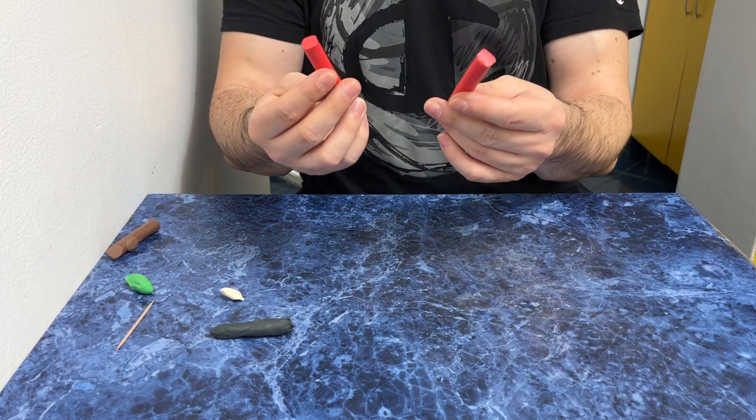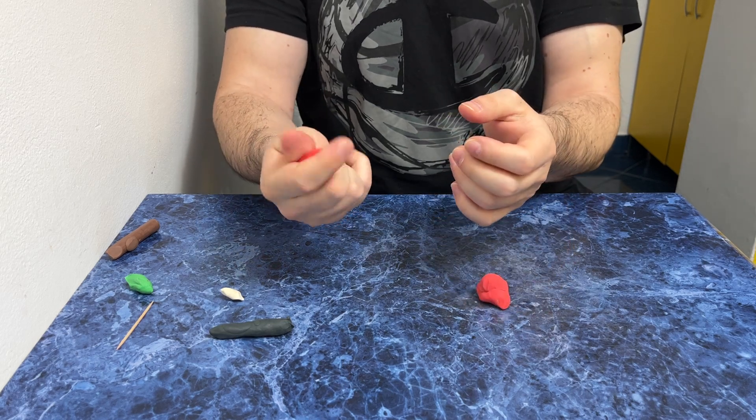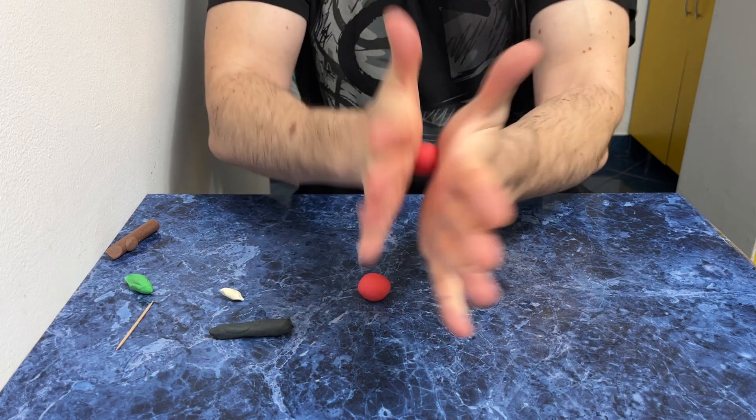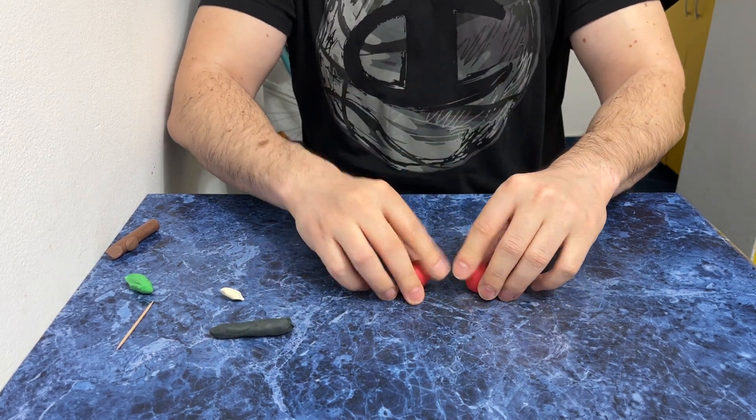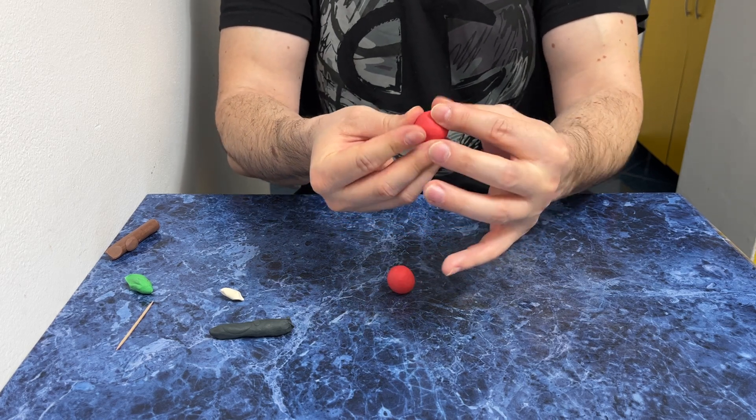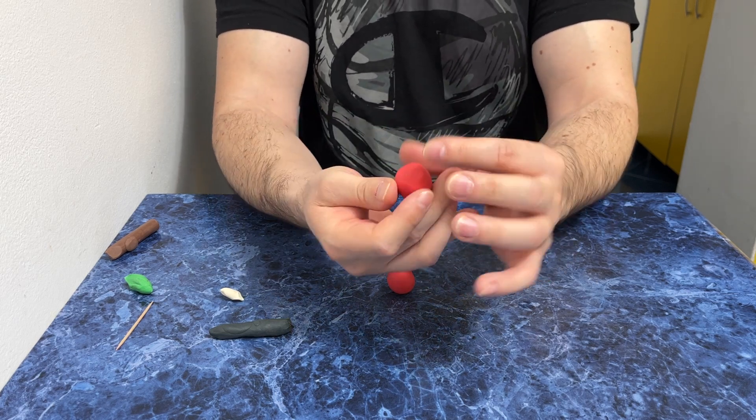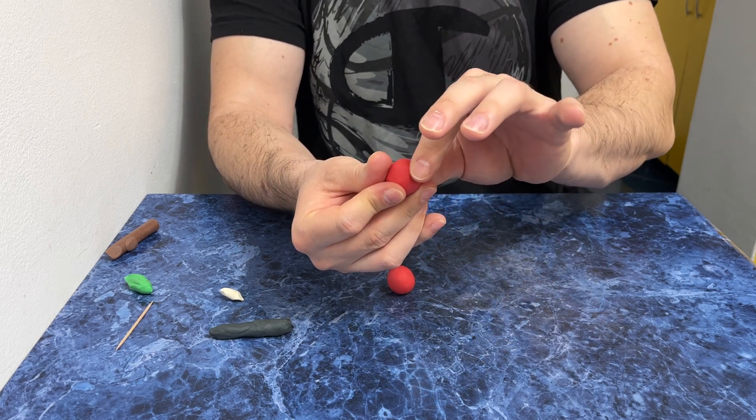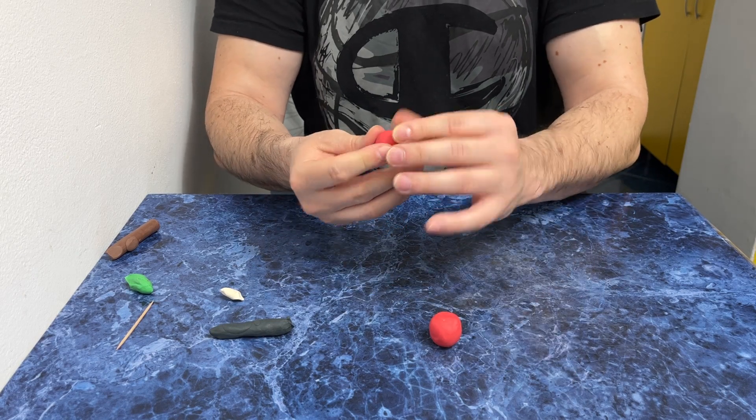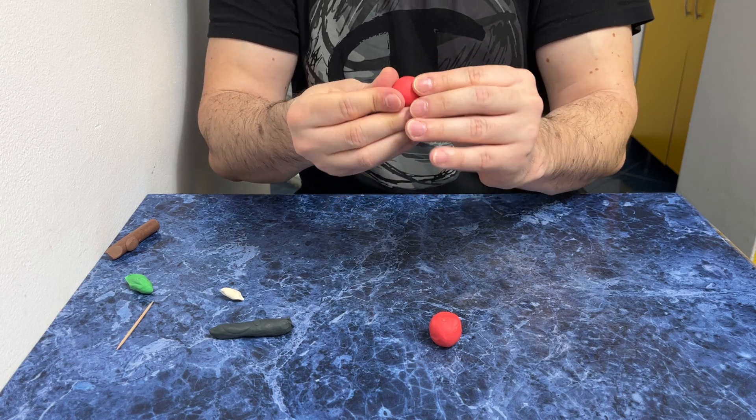Two tabs of red. Let's make some balls, two balls. One, two. And put some pressure, not to be like a perfect ball like a football ball. Put some pressure here to make a little cherry form. And here same.